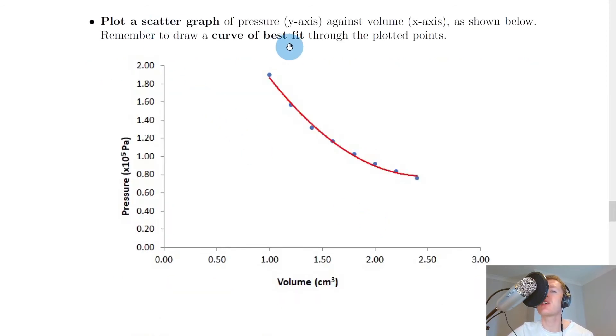You would then plot a scatter graph of pressure on the y-axis against volume on the x-axis as shown below. Remember to draw a curve of best fit through the plotted points. If we plotted pressure in times 10 to the 5 pascals on the y-axis against volume in centimetres cubed on the x-axis, the points take the shape of a curve. That's why we've plotted a curve of best fit rather than a line of best fit. You can see a general trend: as the volume of the gas increases, the pressure decreases, but it also levels off and curves at the end. At National 5 level, a graph like this doesn't tell us an awful lot.